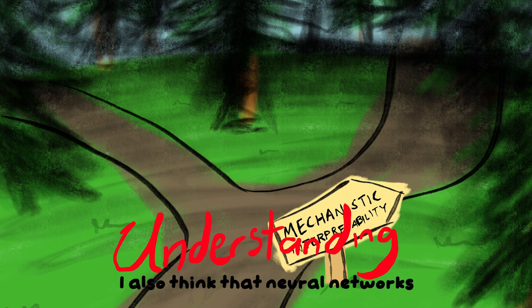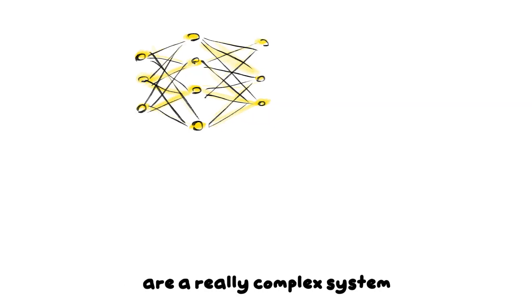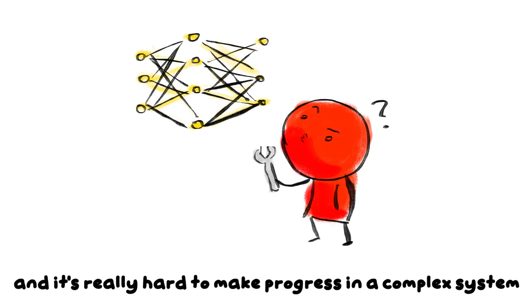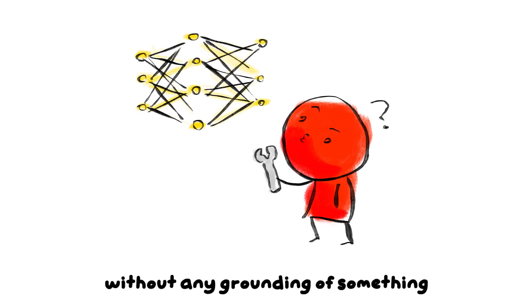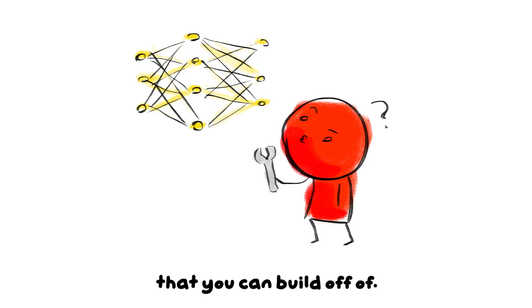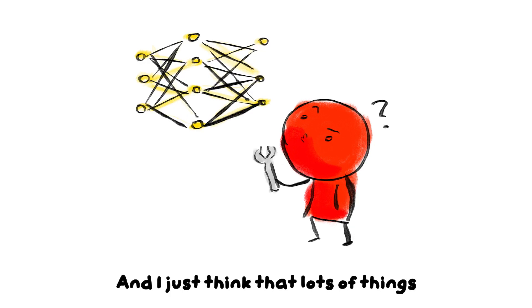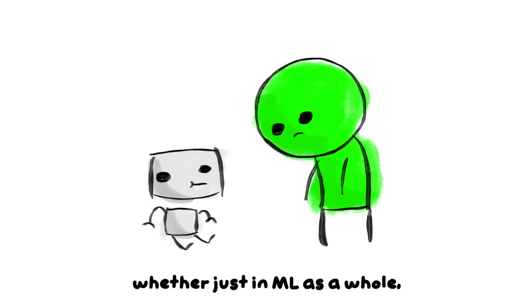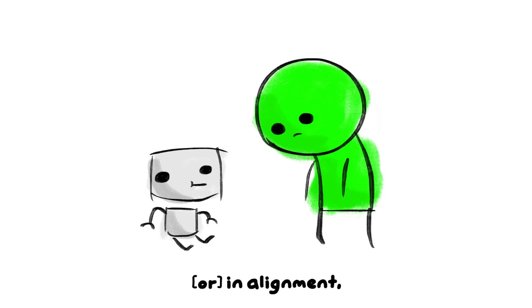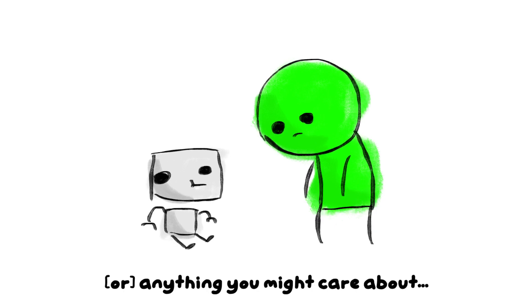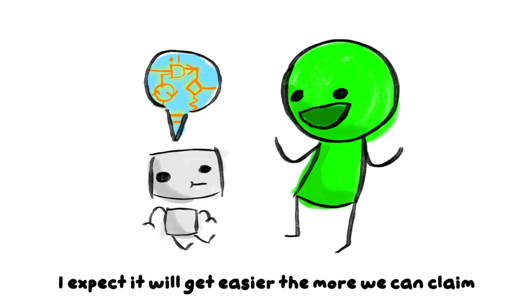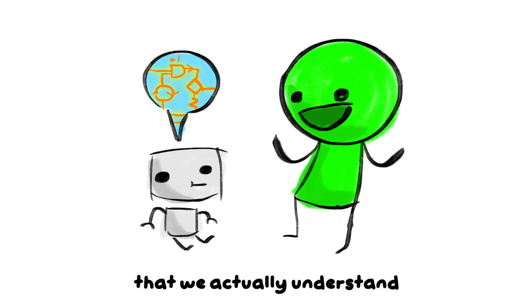I also think that neural networks are a really complex system, and it's really hard to make progress in a complex system without any grounding of something you actually understand that you can build off of. And I just think that lots of things we're confused about in networks—whether in ML as a whole, in alignment, or just anything you might care about—I expect it will get easier the more we can claim that we actually understand what's going on inside these models.